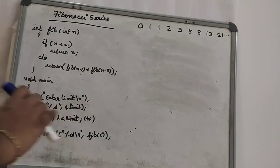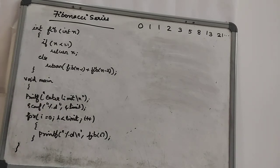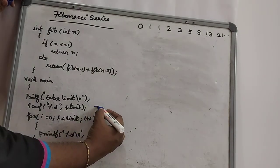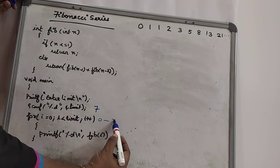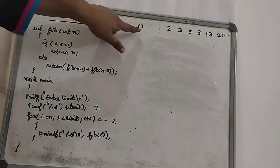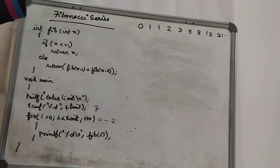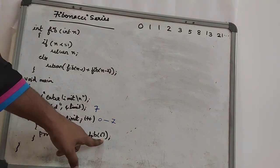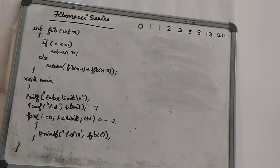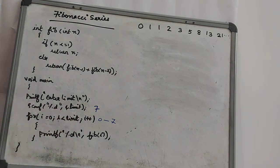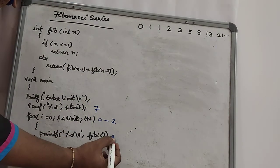We are going to enter the limit. When we start the program, we read the number of elements — for example, 7. The limit value is set. Then we start a loop: for i equals 0, i is less than limit, i plus plus. We call the function Fib(i) at each iteration to print the Fibonacci value at that position.